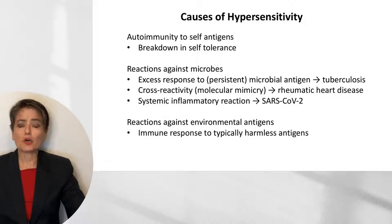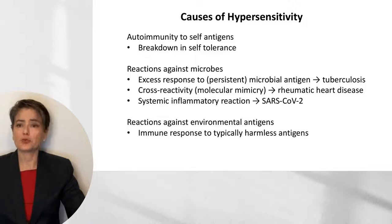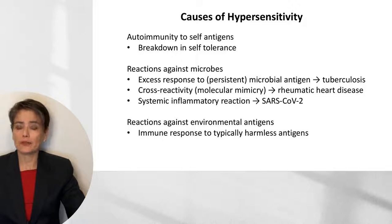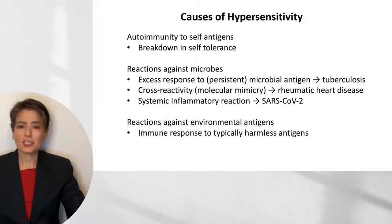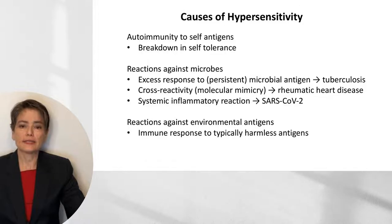Another example would be cross-reactivity between a microbial antigen and a self-antigen. This is referred to as molecular mimicry, and an example of this is rheumatic heart disease. We can also see an exuberant systemic inflammatory reaction that causes extensive tissue damage — this is one of the effectors of COVID-19. Finally, we can get reactions against environmental antigens that are typically harmless, such as pollen or dust leading to allergies.